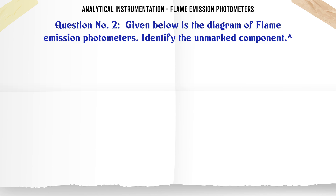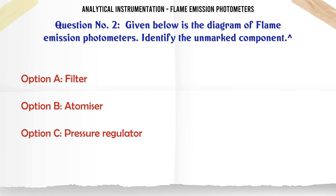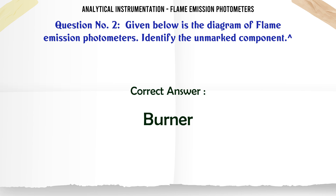Given below is the diagram of flame emission photometers. Identify the unmarked component. A. Filter. B. Atomizer. C. Pressure regulator. D. Burner. The correct answer is: Burner.